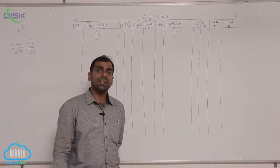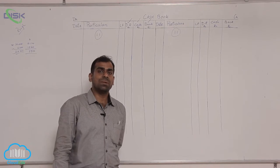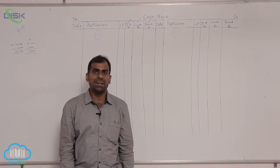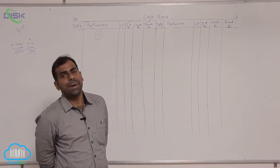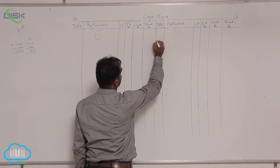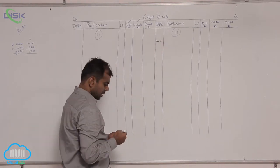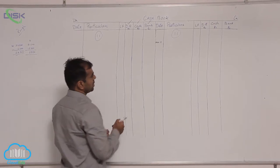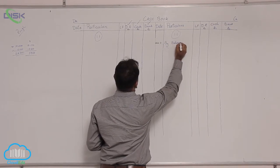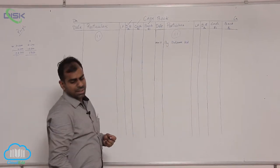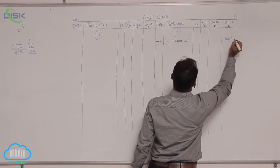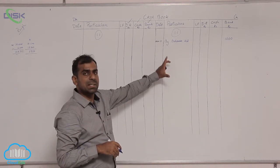On the same date, bank overdraft is stated. Bank overdraft is a temporary loan from the bank which you have to repay, so it will show a credit balance. Whenever you are given bank overdraft as an opening balance, record it on the credit side. The date is November 1st, and in the particulars column write 'by balance brought down', entering the amount of 10,000 in the bank column.